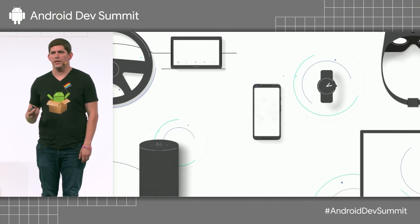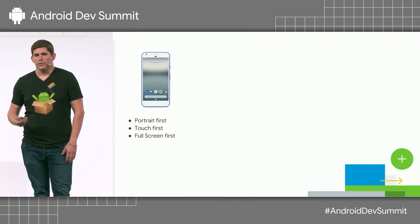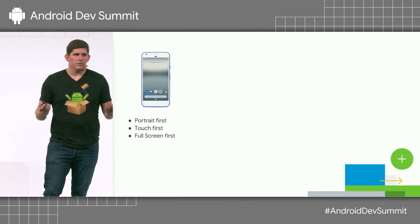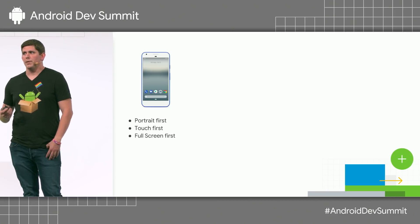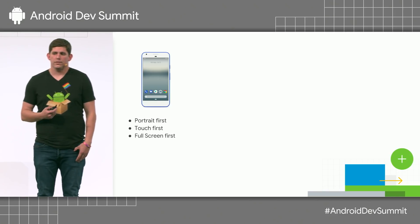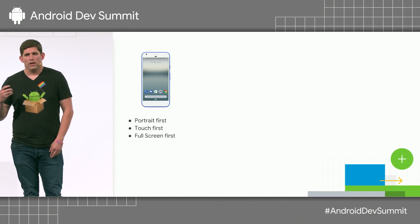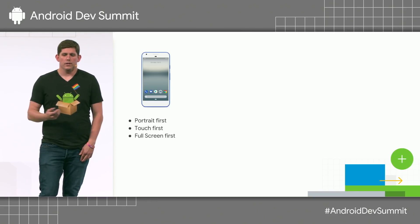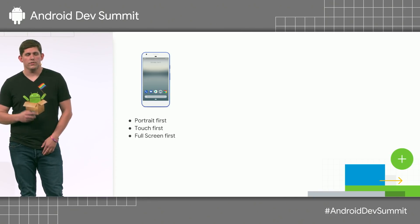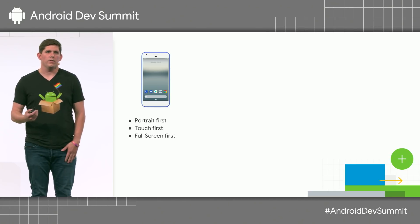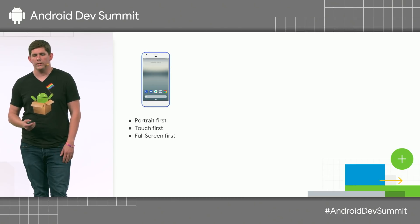Let's see what your mobile APK is running on today. Starting off with the phone — it's what we all develop for mainly, if not solely. A couple of keys about the platform: it's portrait first, touch first, and full screen first. A lot of apps now even lock rotation. Some users do obviously use multi-window or stylus, but the majority are using regular touch screens in full screen.